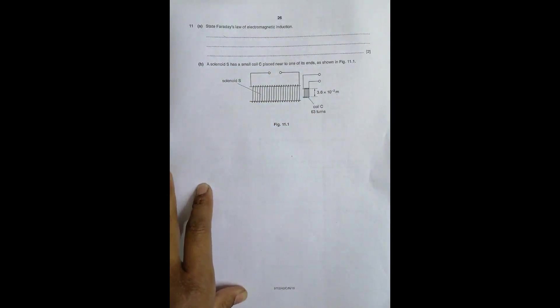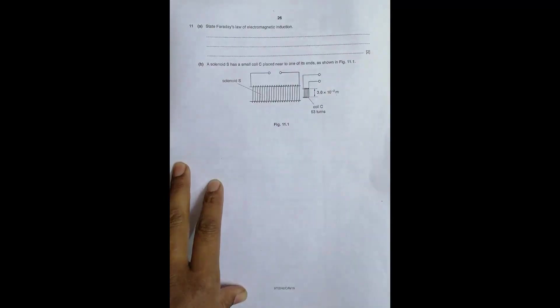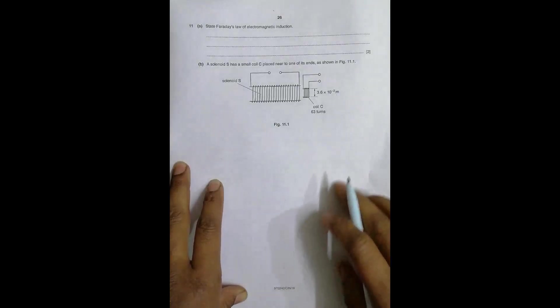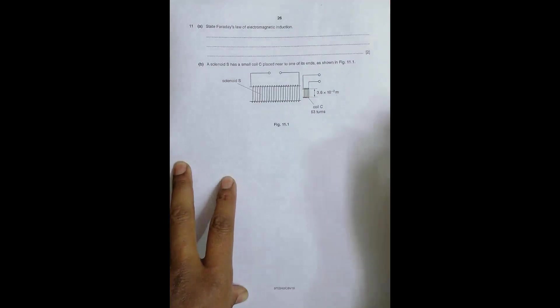The EMF produced in a closed circuit or coil is directly proportional to the rate of change of flux linkage to the coil. You have to remember the phenomenon of EMF and its dependence, which is the rate of change of magnetic flux linkage.